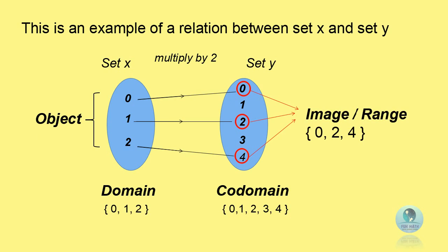We can write it in a set of range. In this case, 0, 2, and 4. This is an example of an arrow diagram.